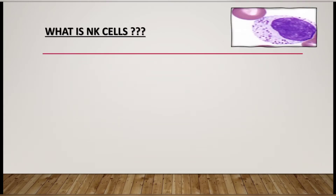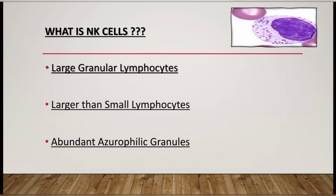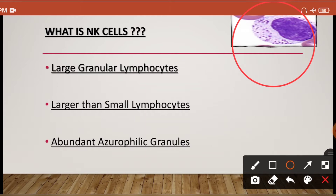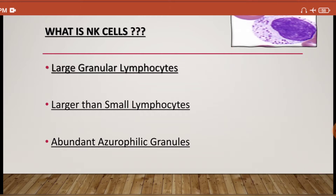What do you mean by natural killer cells? In our previous video we discussed the components of innate and adaptive immunity. The NK cell is a component of our innate immunity. This cell is also known by another very popular name: large granular lymphocytes. This name is given because it contains abundant azurophilic granules in the cytoplasm, which contain enzymes. This cell is also larger than small lymphocytes, which is why the name large granular lymphocytes is given.